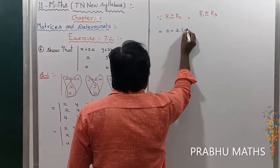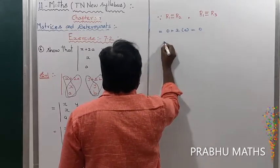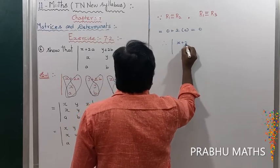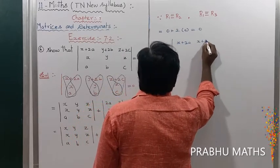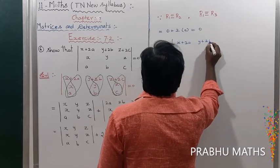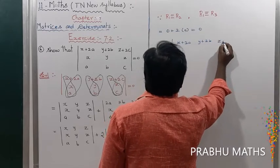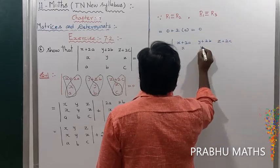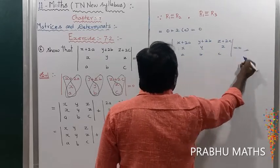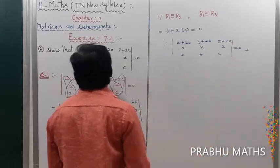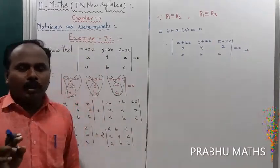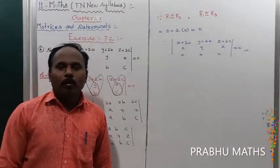So that is equal to 0, plus 2 times 0, which is equal to 0. Therefore, the determinant of X plus 2A, Y plus 2B, Z plus 2C — then X, Y, Z — then A, B, C — is equal to 0. Hence the proof of the sixth sum is complete, by using property number 7. Refer to the book.